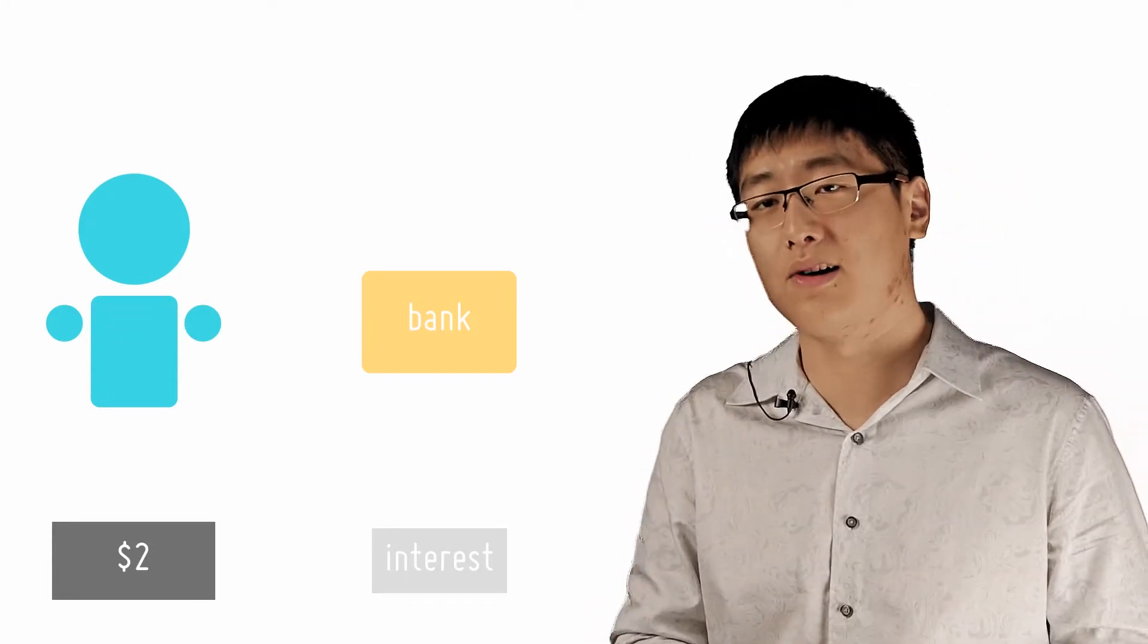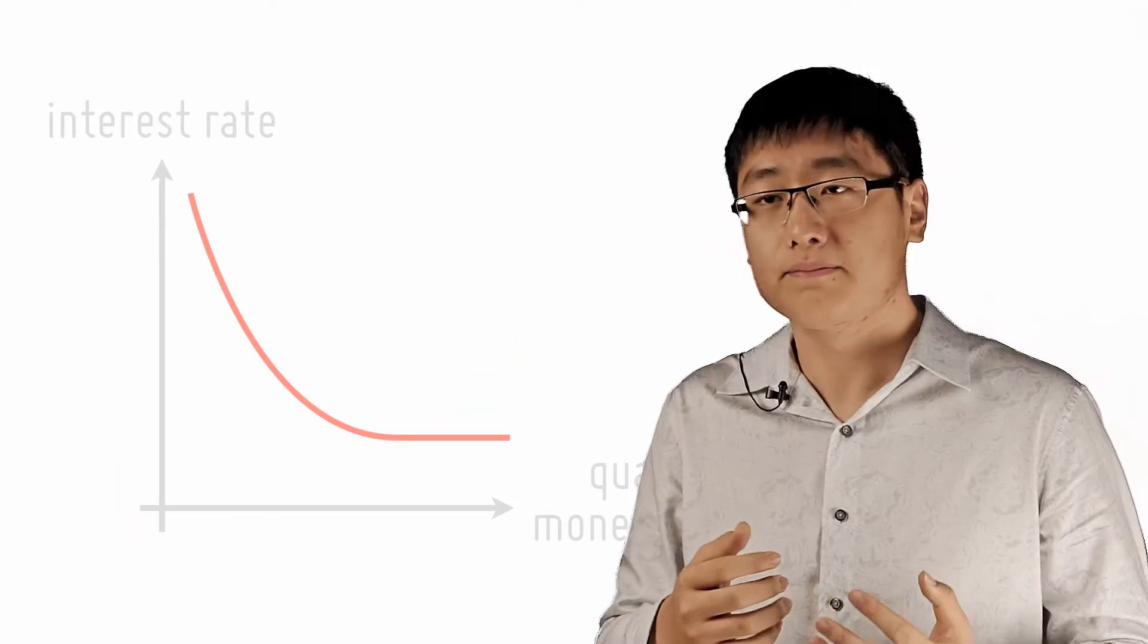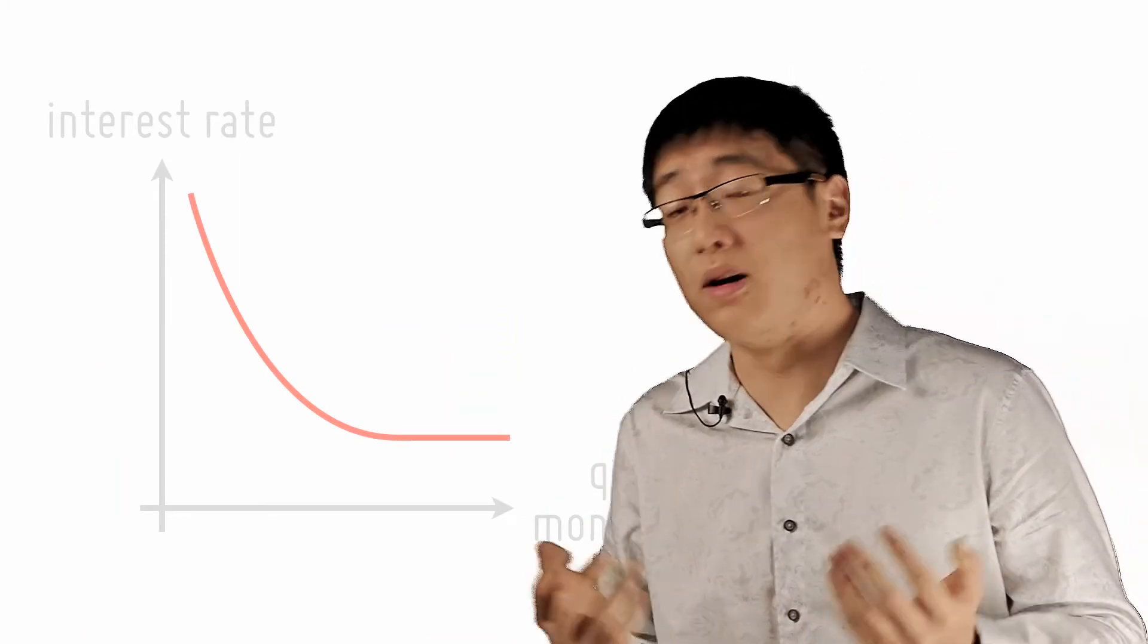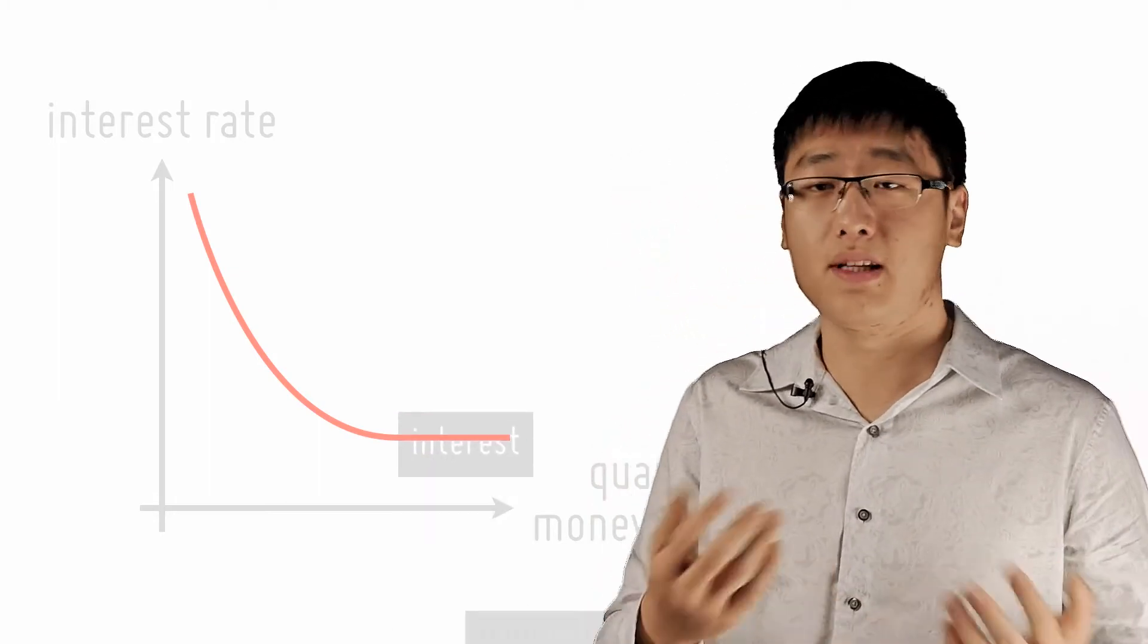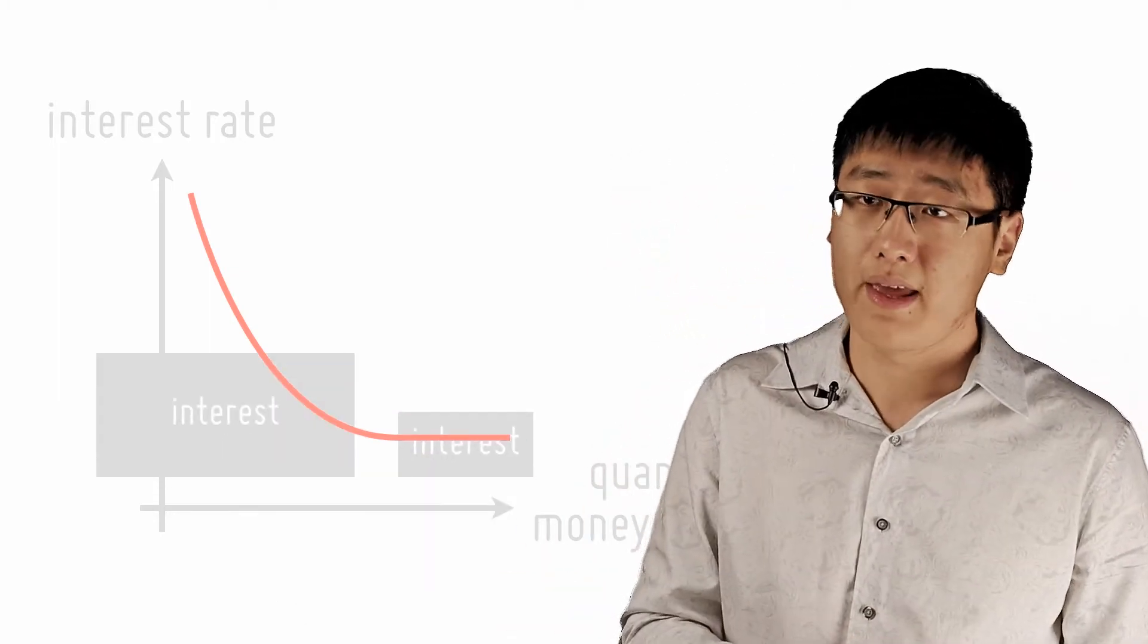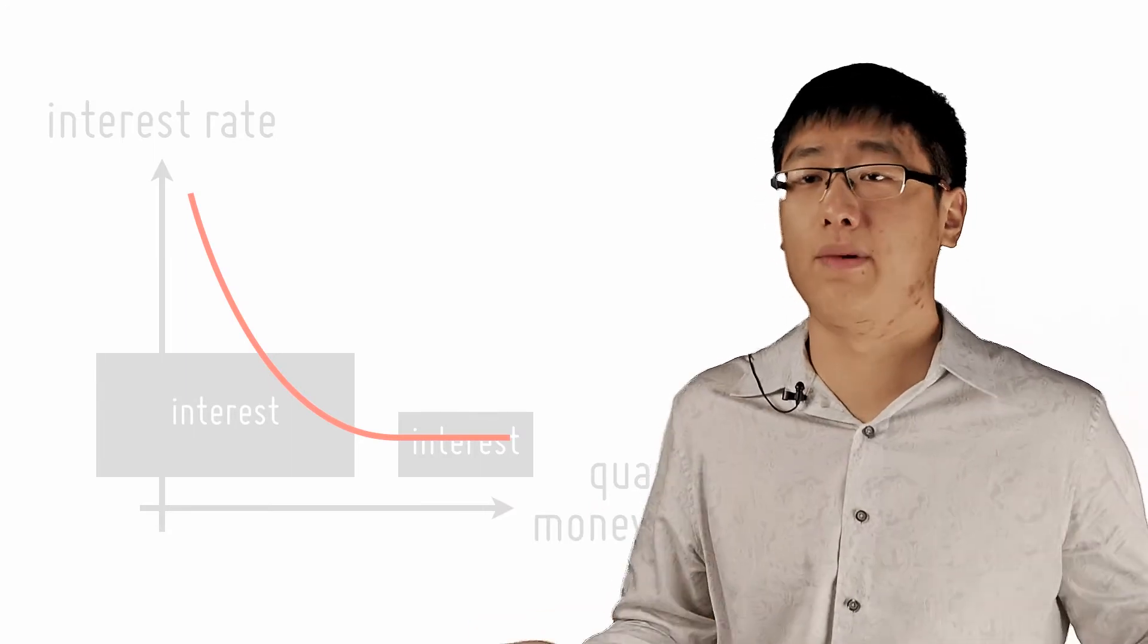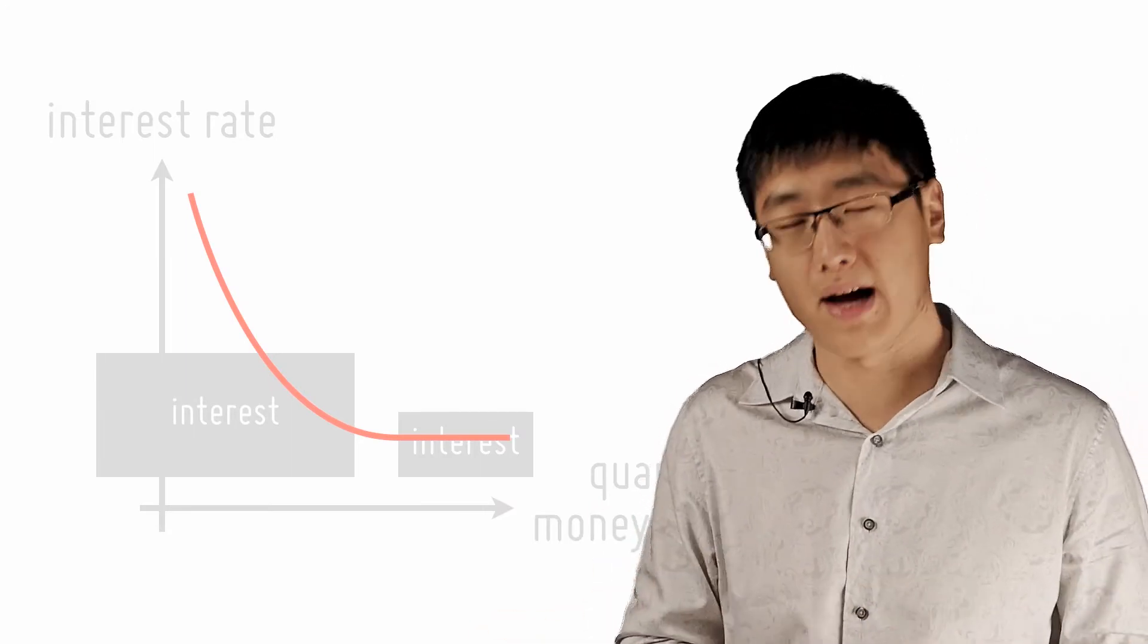If we assume that transaction costs are constant, then the asset motive will cause the money demand curve to slope downwards. Money demand will then be low where interest rates are high, and money demand will be high where interest rates are low. Hence, this is the shape of the money demand. When interest rates are high, low money demand, and when interest rates are low, there will be high money demand.